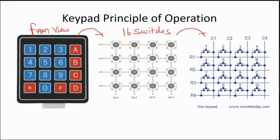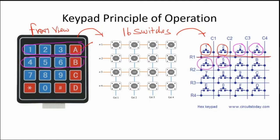You have four columns — C1, C2, C3, C4 — and four rows. Each switch connects between a particular column and a row. Switch one connects column one and row one, meaning if you press it, whatever information is on column one is communicated to row one. Similarly, switch two short-circuits column two and row one. Switches one, two, three, and A all connect to row one with four different columns.